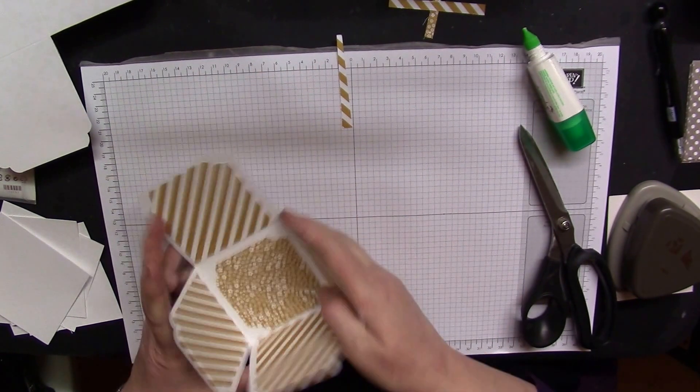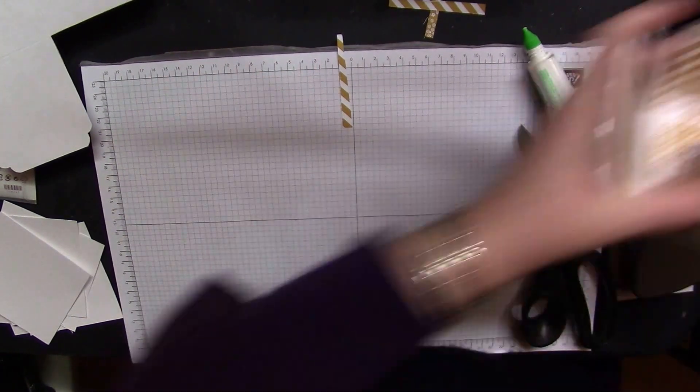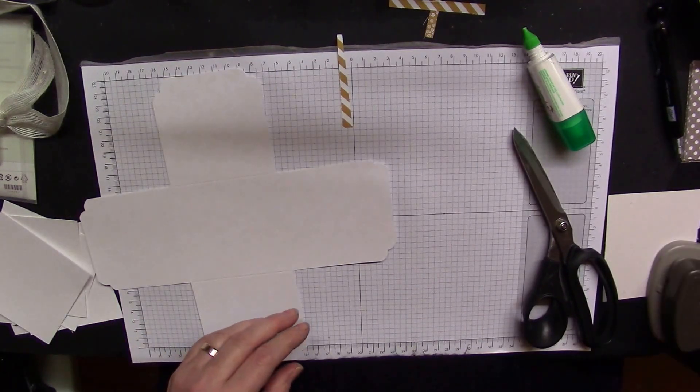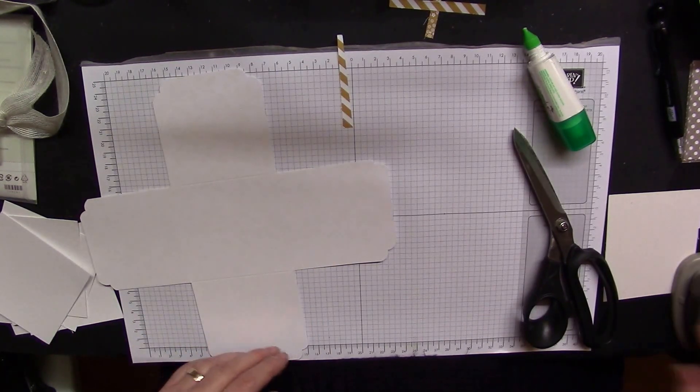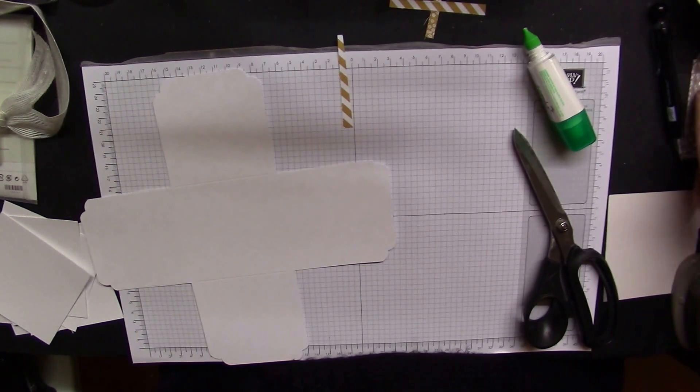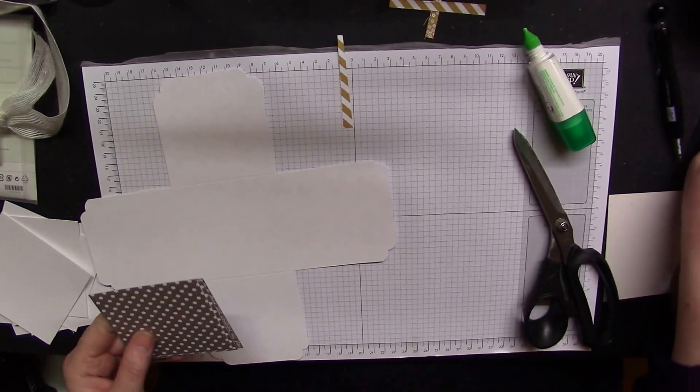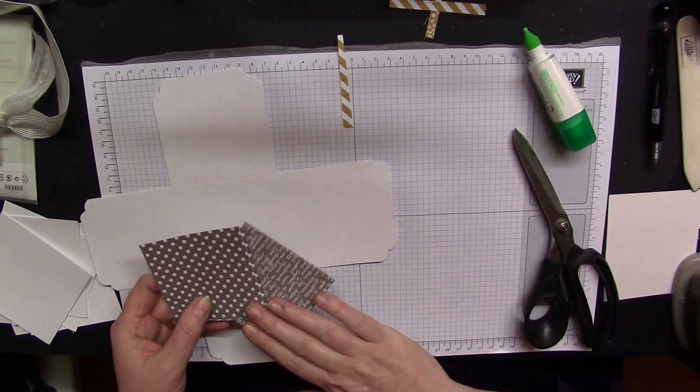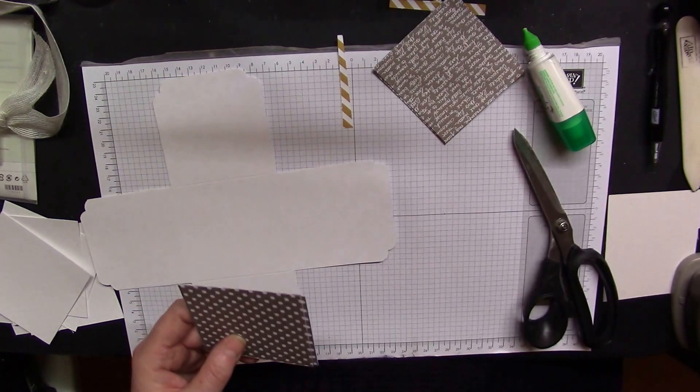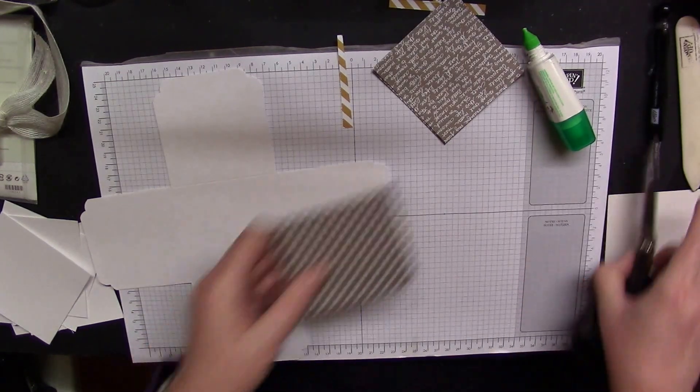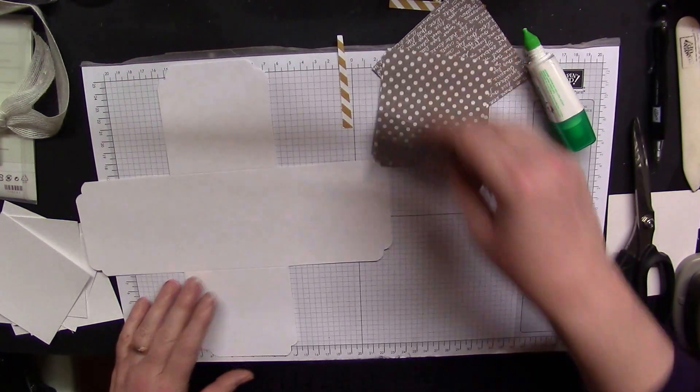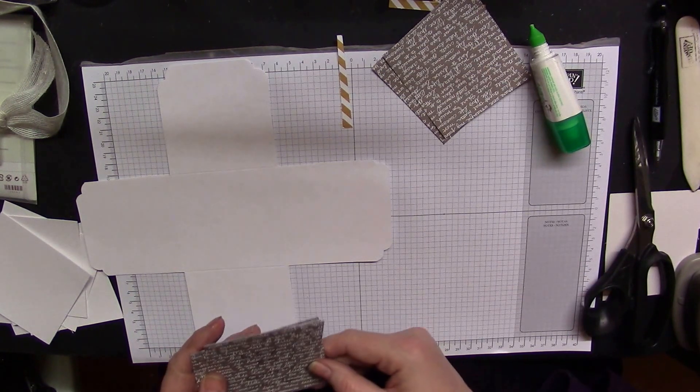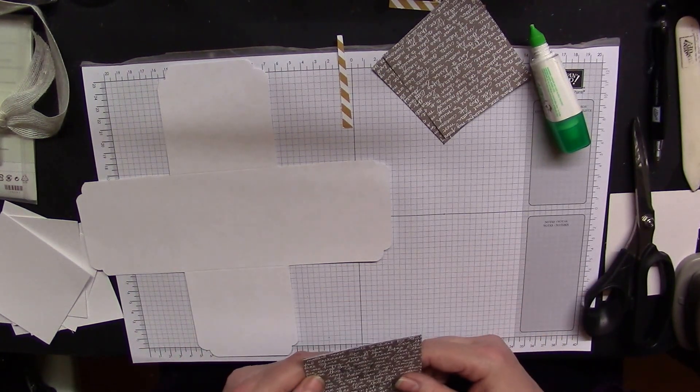That's that layer done. Two sides done and then we've got this last one. There we go. For this one I'm using contrast paper so it falls between the Delightful Dijon and the lovely sorbet colors. Just the same as before. These all measure, see if I can find the one I wrote on.